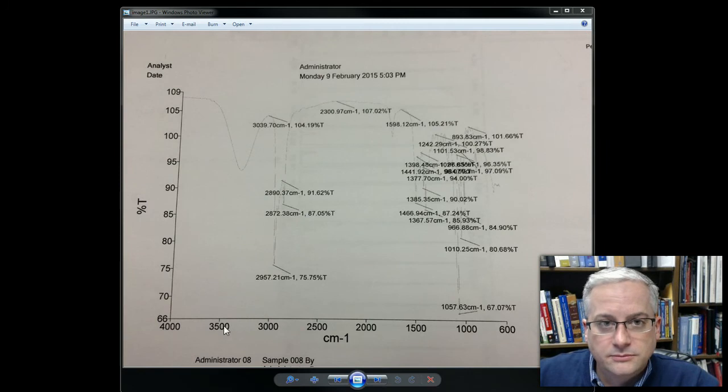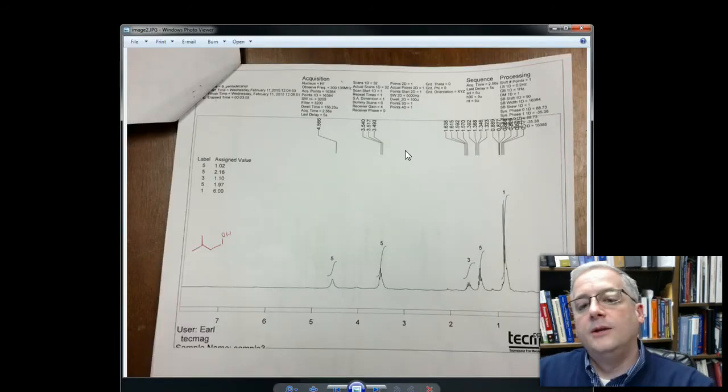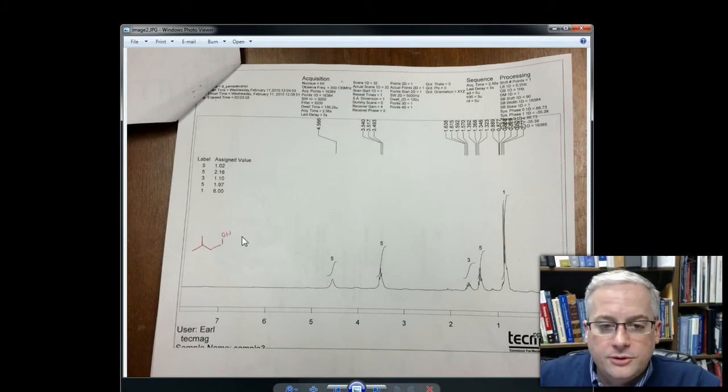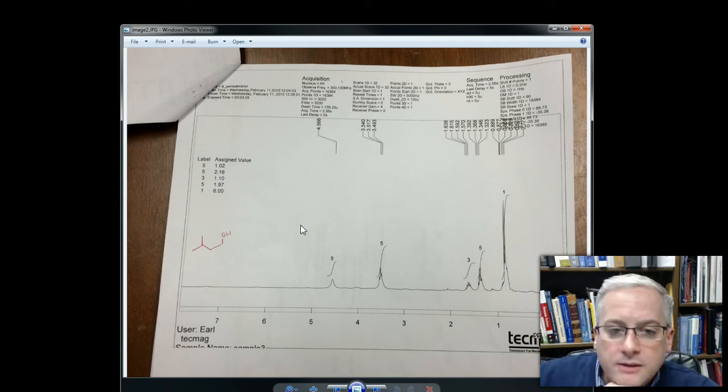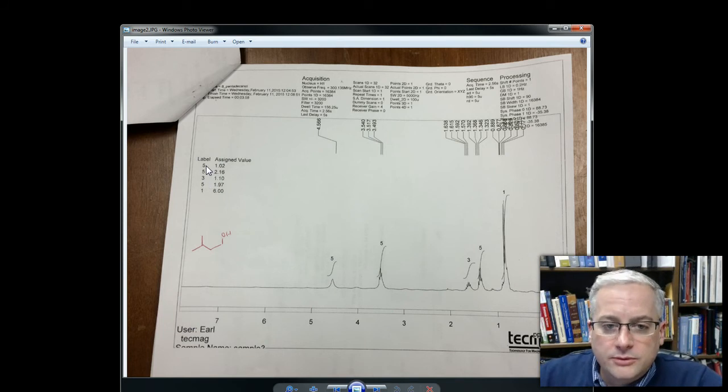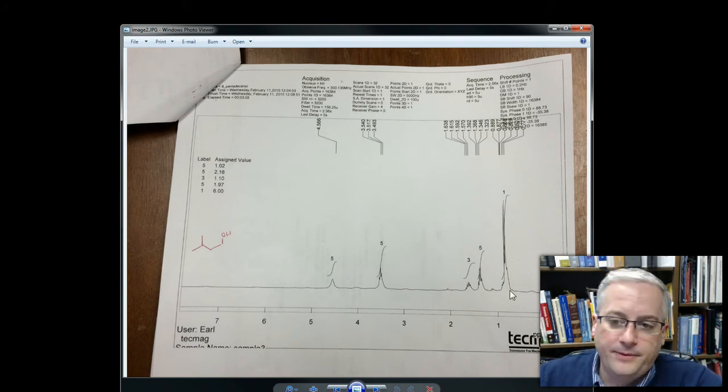So again, IR tells you what function groups. Can't tell you the purity. Mass spec tells you what's in the sample by the individual peaks. And you can verify that you've made what you've made. But again, it doesn't tell you anything about the purity. So what do we have left? Image 2. Image 2 is the NMR. So here's our NMR. Notice, here's our compound again. And we have our peaks come out in the splittings there. And here we have the integrals. So our integrals, as we can see, we have a label. And I don't know why it messed up the labels. But label 1 is here. Label 2 is here. Label 3 is here. 4 is here. And 5 is here. As they typically go in this direction.